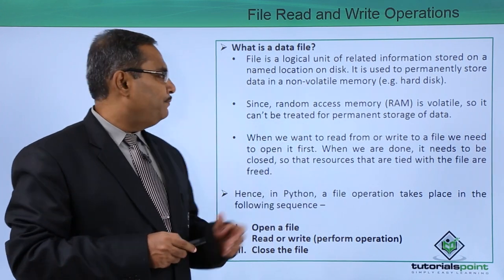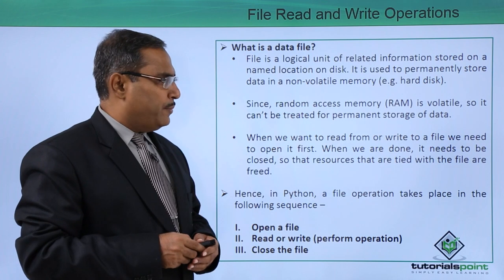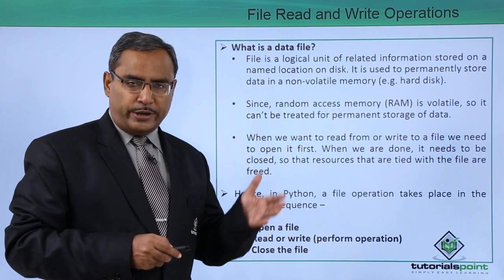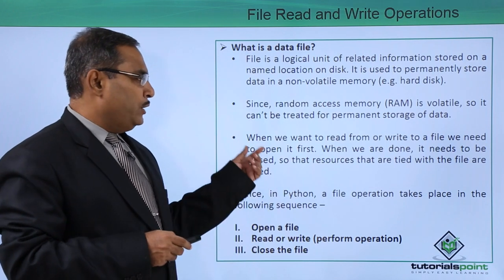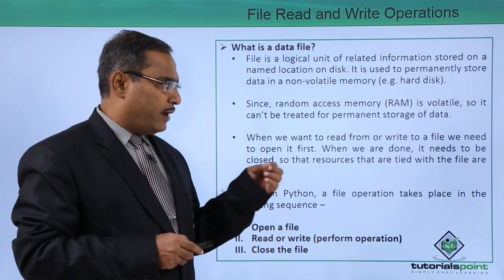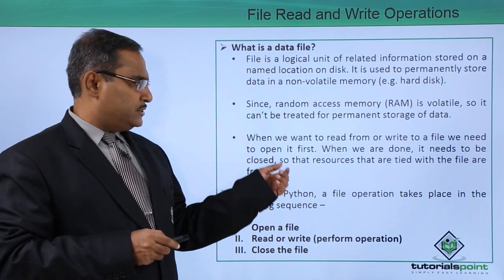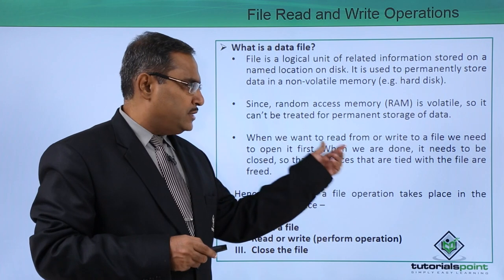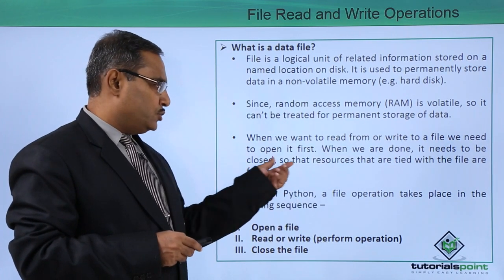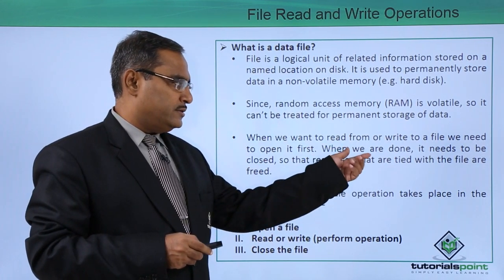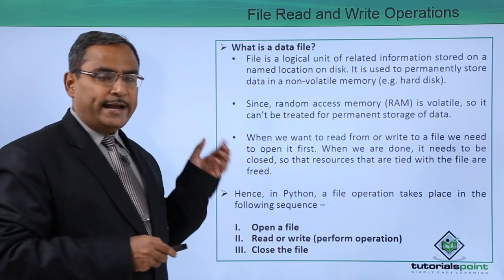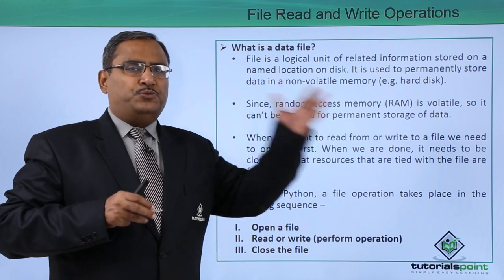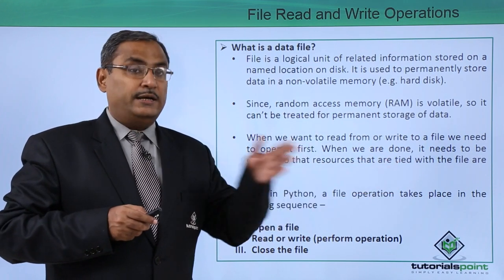Here, a hard disk is the example. Since random access memory, that is RAM, is volatile, it cannot be used for permanent storage of data. When we want to read from or write to a file, we need to open it first. When the operations are done, the file needs to be closed so that the resources tied with the file are freed. Before reading or writing, we are supposed to open the file in the respective mode.